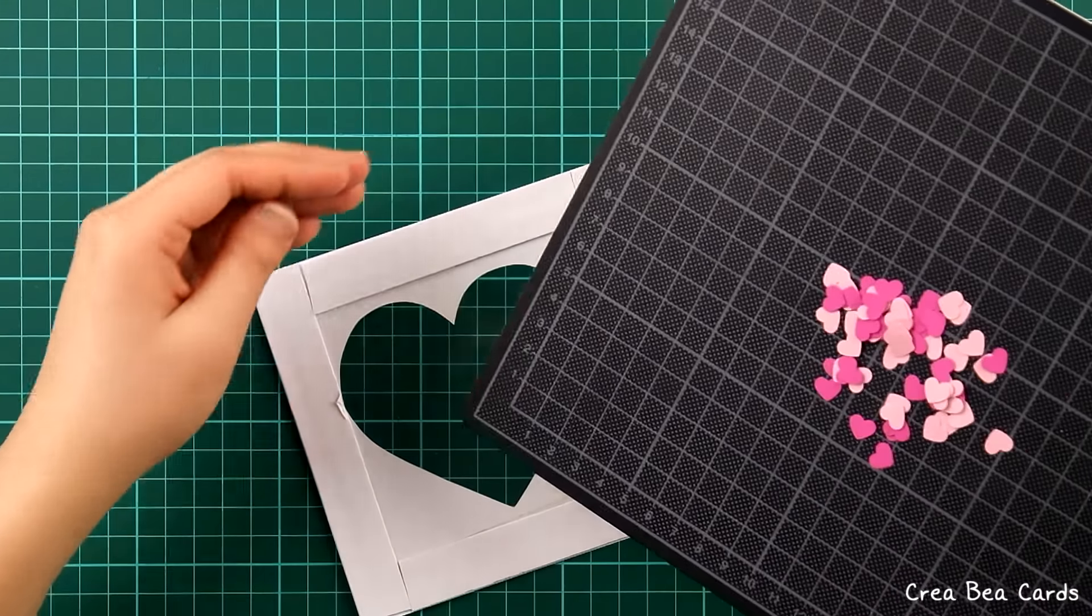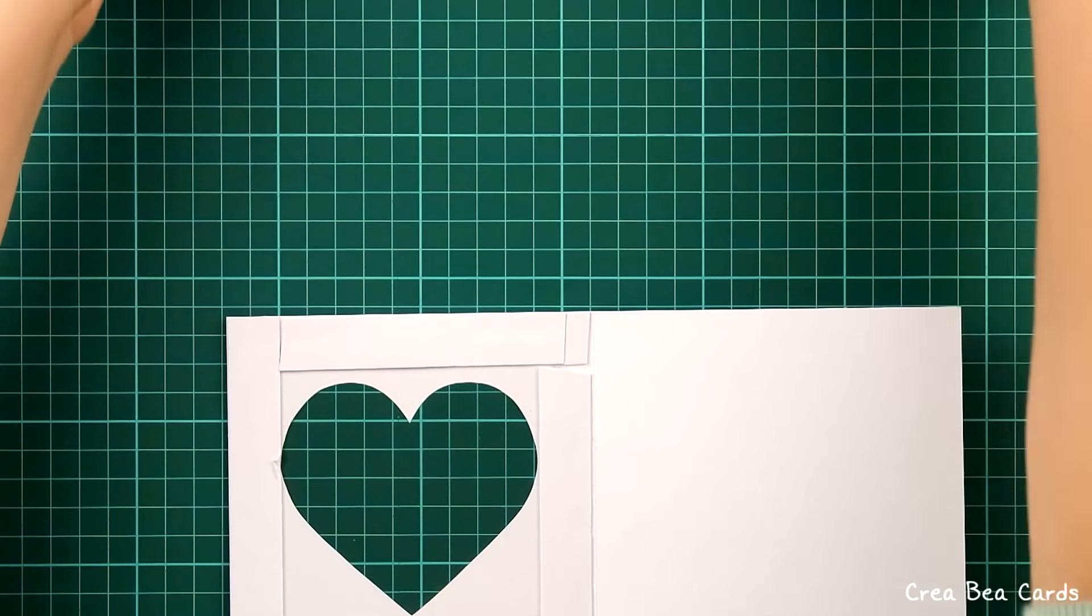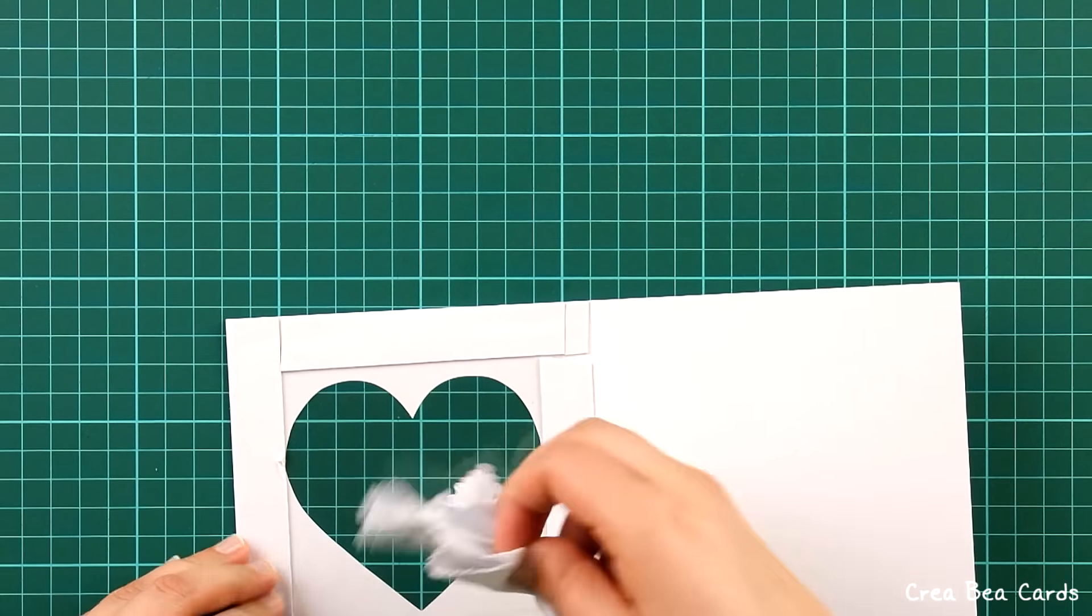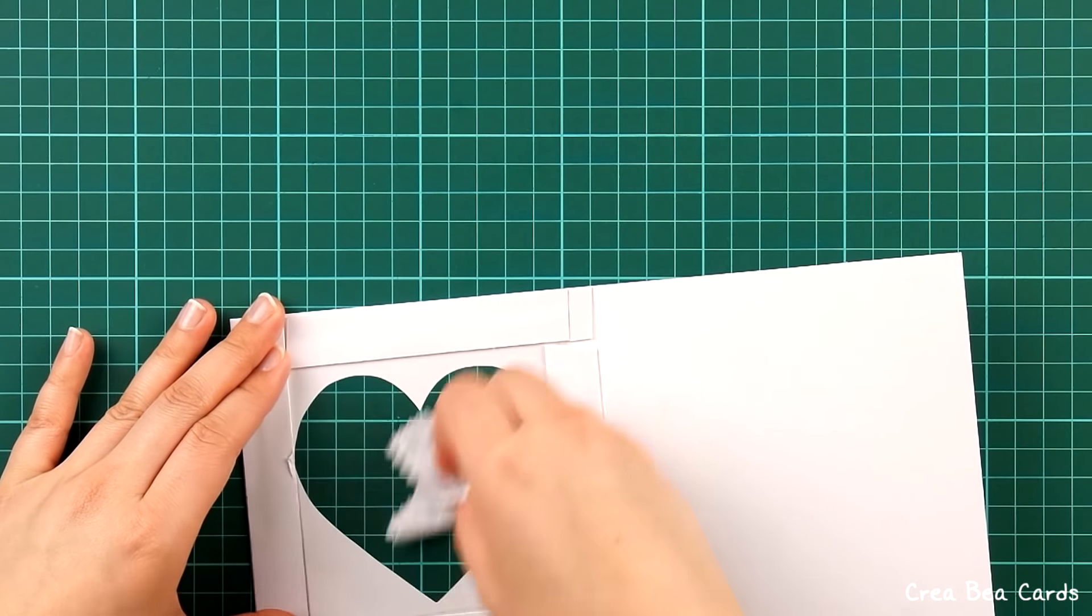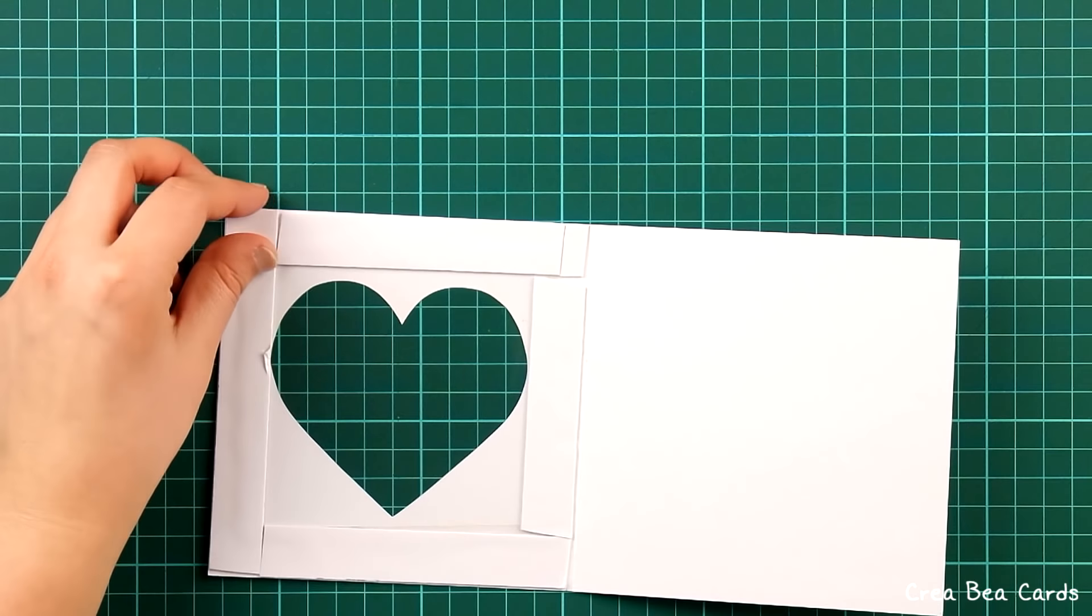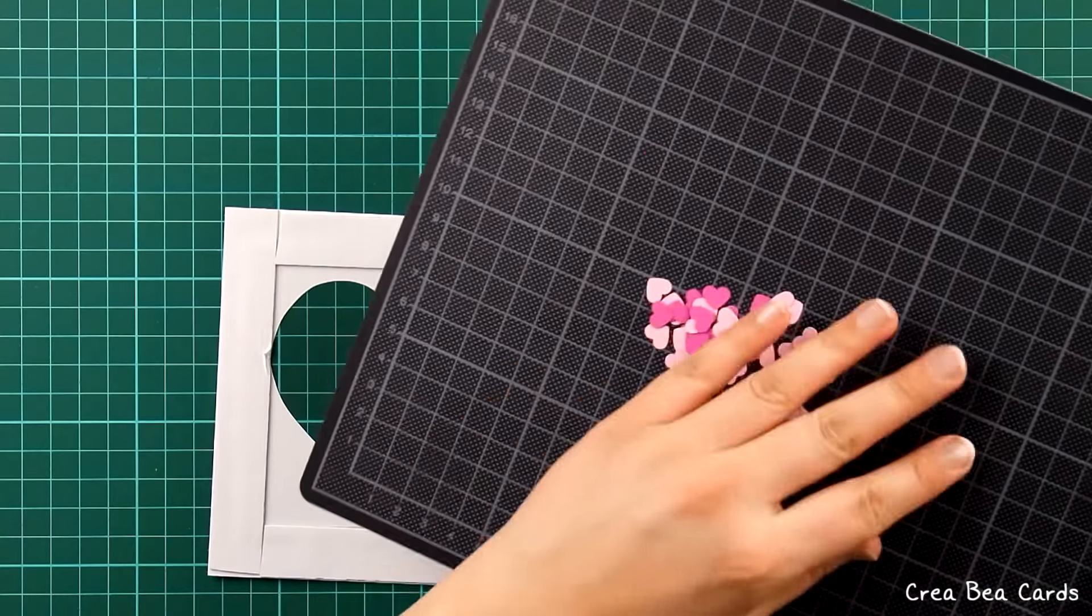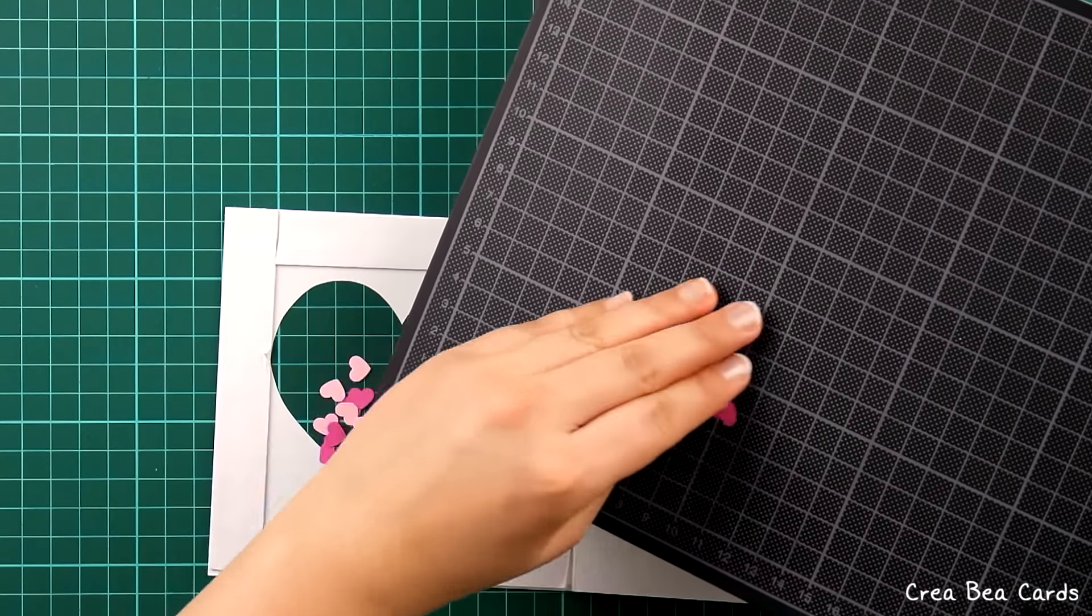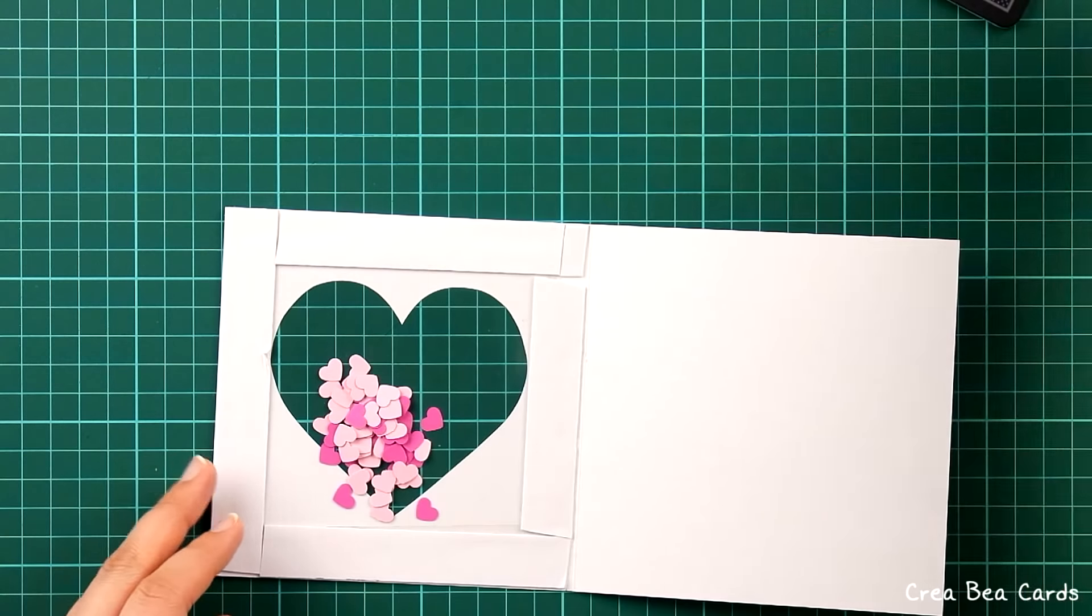Before putting the small hearts onto the card front, you may want to clean the plastic sheet with a small cleaning cloth. Then, put the small hearts on the card front and spread them a bit.